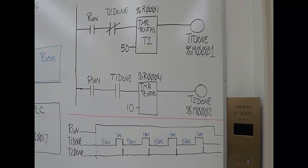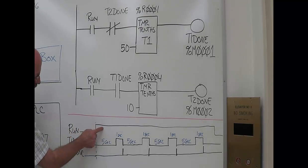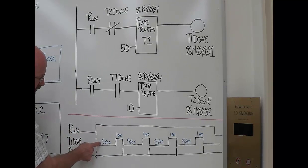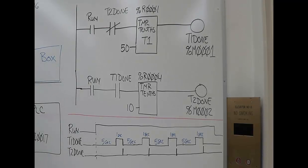So let's say, for instance, I need a valve to operate for 5 seconds and then a valve to operate for 1 second. First valve is 5 seconds. So I look at my timing diagram. As long as run is on and T1 done is off, that's my 5-second valve output.